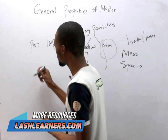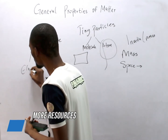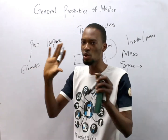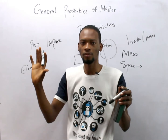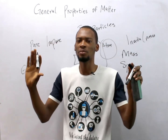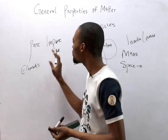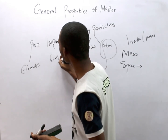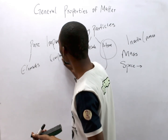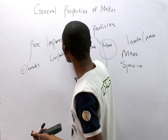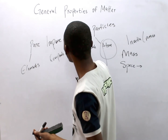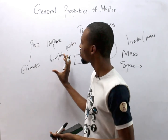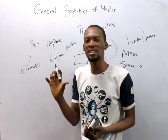Remember, substances can either be pure or impure. Pure substances are called elements because elements have only one type of atom. Impure substances can either be compounds or mixtures.